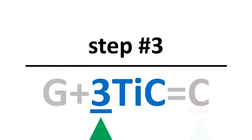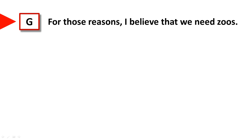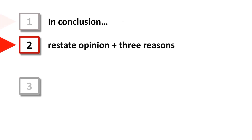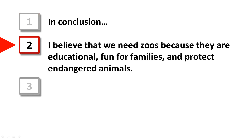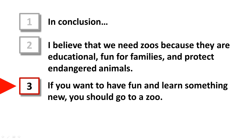Next, I will develop my conclusion. This is the conclusion from the basic independent essay from the previous video. I can develop it three ways. I start with a transitional phrase: 'In conclusion.' Next, I restate my opinion and my three reasons: 'I believe that we need zoos because they are educational, fun for families, and protect endangered animals.' Next, I add a conclusion strategy: 'If you want to have fun and learn something new, you should go to a zoo.'